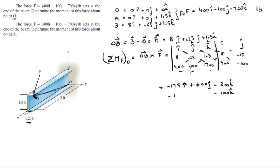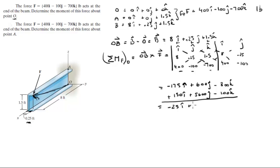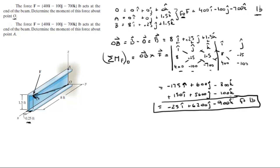Now the negative diagonals: 400 times 0.25 is 100, so minus 100k; negative 100 times 1.5 is negative 150, so positive 150i; and negative 700 times 8 gives positive 5600j. Adding them all up, the final answer is negative 25i plus 6200j minus 900k, in foot-pounds. That is the answer to the first problem.